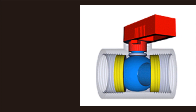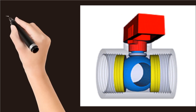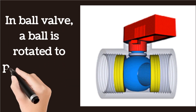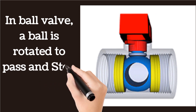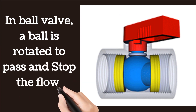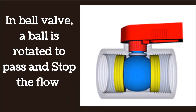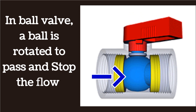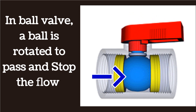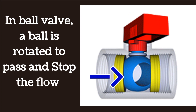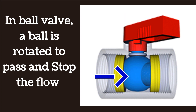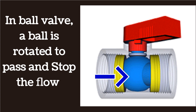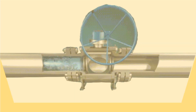Here a rotating ball valve is shown in the image. As you can see, a ball is rotating which passes and stops the flow. I am trying to show you with the help of an arrow. I hope you understood. Let's come to the next slide.